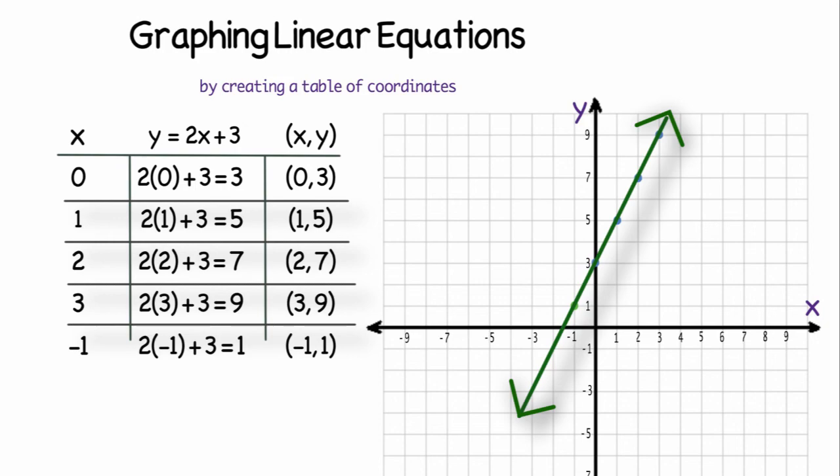The negative 1 for x was paired with the 1 for y. So that has been verified that my graph was graphed accurately, and it allowed me to find other solutions to the equation. So that is the graph of y equals 2x plus 3.